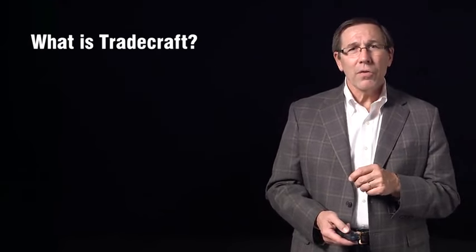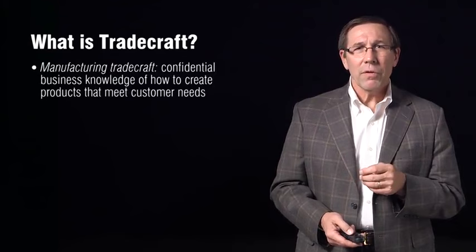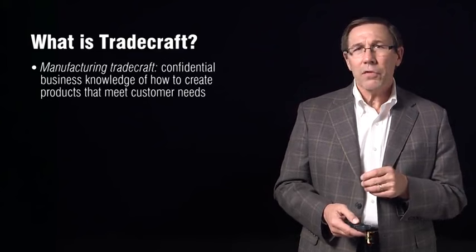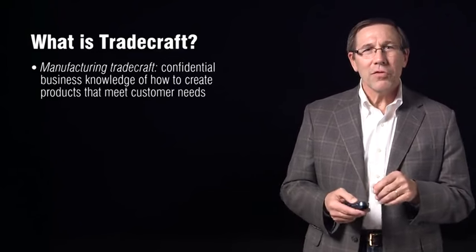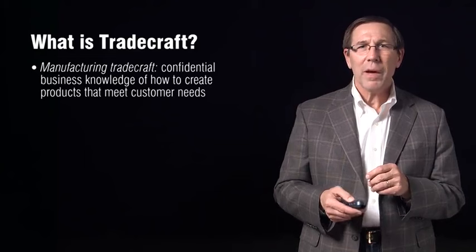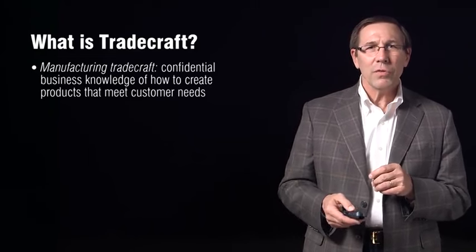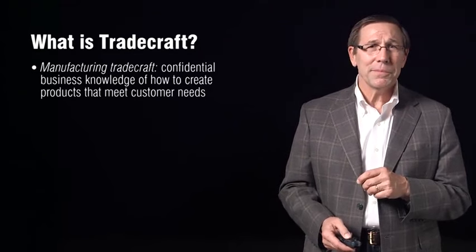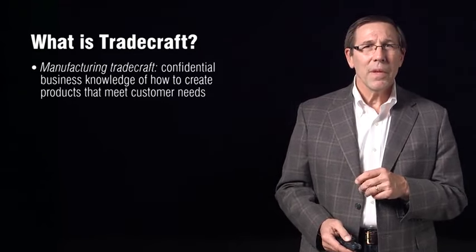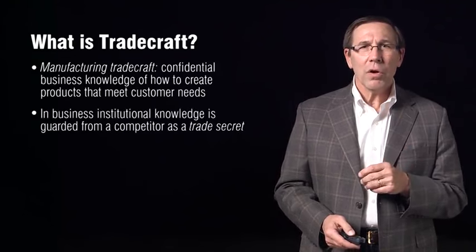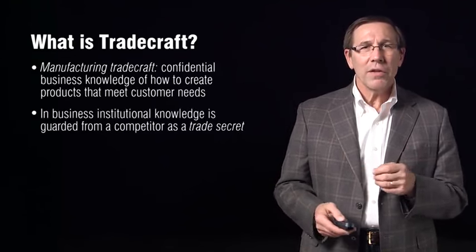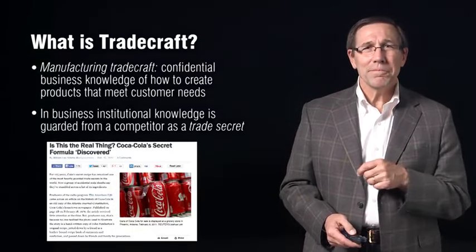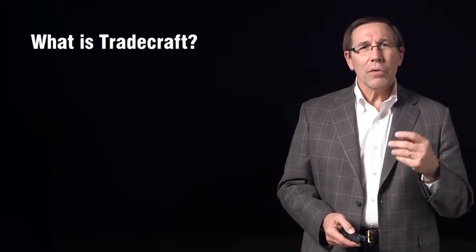In a commercial enterprise, we have manufacturing tradecraft — the confidential business knowledge used to create a product for a customer. Commercial product production represents the collective manufacturing knowledge, skills, experience, and uniqueness of the work that has often passed from generation to generation. In business, this institutional knowledge is guarded from the competitor; it's called a trade secret. Let me give you an example: the Coke formula.